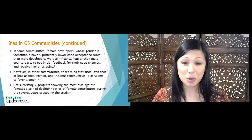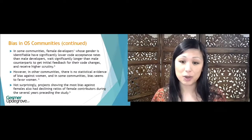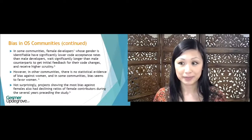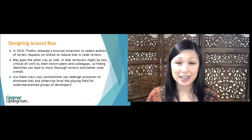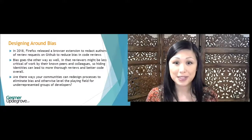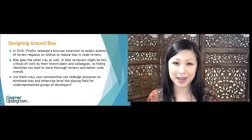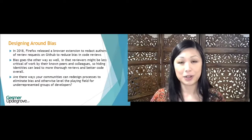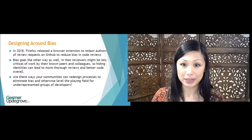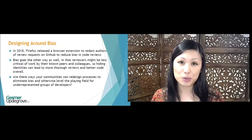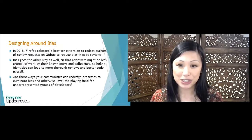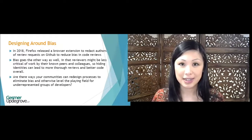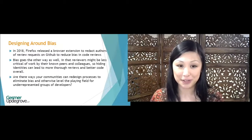Not surprisingly, projects showing the most bias against women also had declining ratios of women contributors during the last several years. In 2018, Firefox released a browser extension designed to address this issue — it redacts author information from review requests on GitHub to reduce bias in code reviews. Bias can go the other way as well: reviewers may be less critical of work done by their friends and colleagues, so hiding identities can lead to more thorough reviews and thus better code overall. Give some thought to whether the communities and projects you participate in can redesign processes to either eliminate bias or otherwise level the playing field for underrepresented groups.